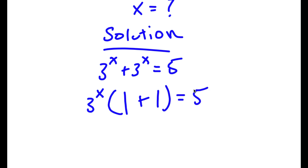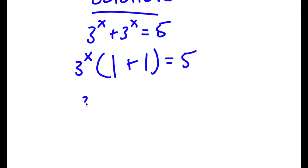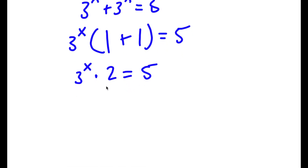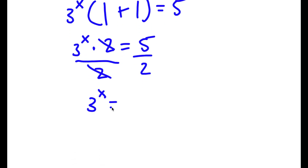So now I have 3 to the power of x times 1 plus 1 is equal to 5. Now 1 plus 1 equals 2, so I have 3 to the power of x times 2 is equal to 5. I'm going to divide both sides by 2, so these cancel out and I'm left with 3 to the power of x is equal to 5 over 2.